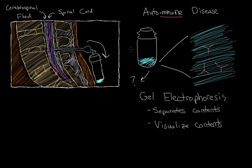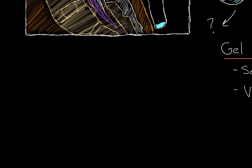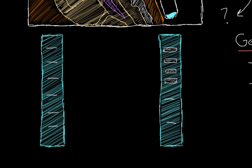Basically we're going to send this vial off to a lab, and they're going to perform gel electrophoresis. When you separate the contents of the cerebrospinal fluid and when you visualize it, it looks something like this.